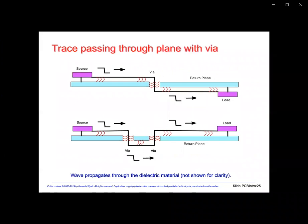Let's look at an example of wave propagation through a return plane. The dielectric is not shown for simplicity, but just imagine it lies between the circuit trace and return plane where the red waves are shown. In the top diagram, the signal travels from the source along the trace through a via and along more trace to the load. Notice that the displacement current has a defined path back to the source between the circuit traces and return plane, and the electromagnetic field is bound along the whole path.